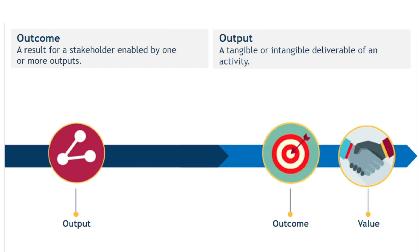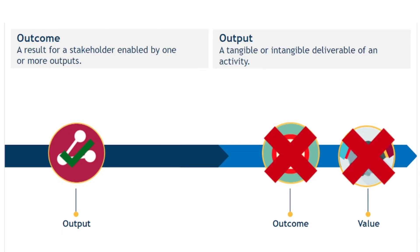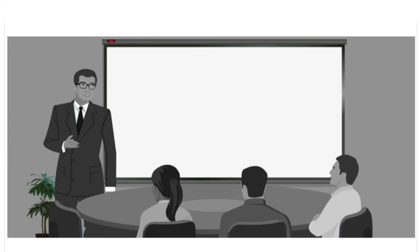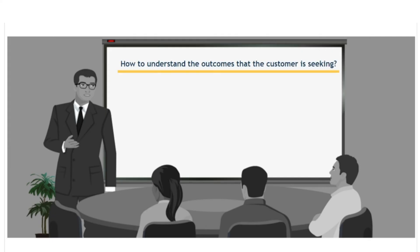The desired outcomes could be many and varied. While there are many things that can influence a customer's perception of service value, it is probably safe to say that it is unlikely that a customer would feel they were getting value from a service which was not consistently enabling them to achieve their outcomes. To ensure a service provides value, the service provider must seek to understand or anticipate the outcomes that the customer is seeking, and ensure a focus on these is maintained throughout the design, build and ongoing delivery of the service.